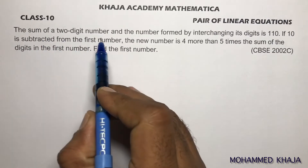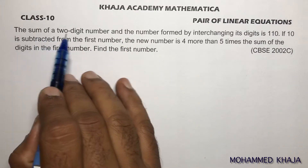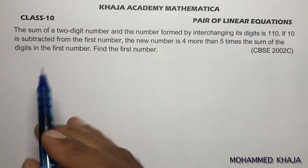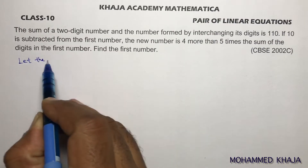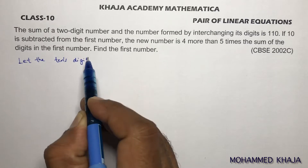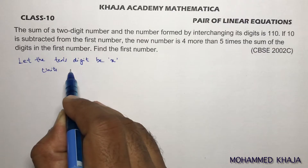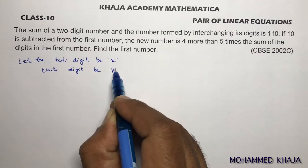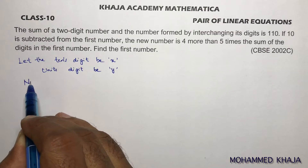Whenever a two-digit number problem comes, first write four steps, then read the question and write the conditions. The four steps are: let the tens digit be x and let the units digit be y.